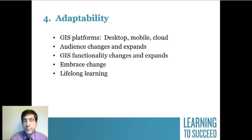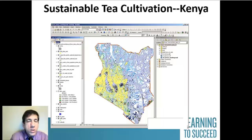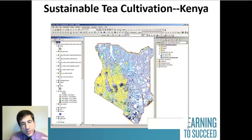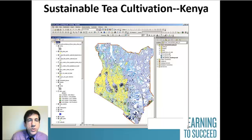You're adaptable — and that's a super important skill as we move forward into the future. Here's an example of an analysis on sustainable tea cultivation in Kenya: where are the best sites to locate new tea farms, looking at soil type, altitude, distance to market, transportation networks, accessibility to water. You've got to be adaptable about where you'll get the data, how to display it, and how to get it out there so other people can consume and use it.